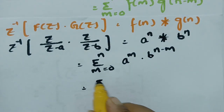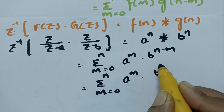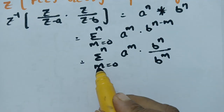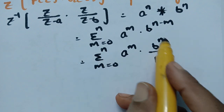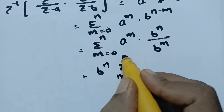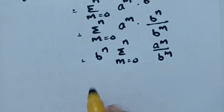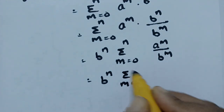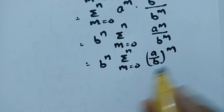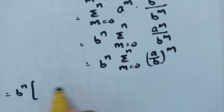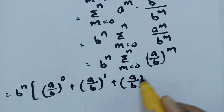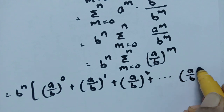Solving this: sigma m equals 0 to n of A power m into B power n minus m, which equals sigma m equals 0 to n of A power m into B power n divided by B power m. Since n is constant, B power n is brought outside, giving B power n times sigma m equals 0 to n of A by B power m. Expanding for m equals 0, 1, 2 up to n gives: (A/B)⁰ + (A/B)¹ + (A/B)² + … + (A/B)ⁿ.